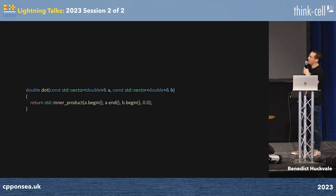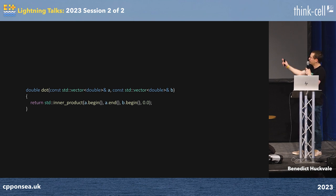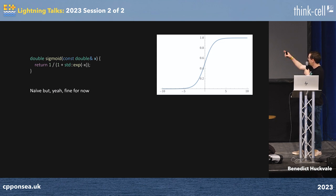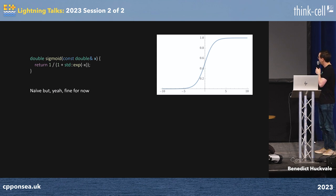Dot product — we've got inner_product, so we can just use that, brilliant. Something you need for machine learning is the sigmoid function. It's not particularly numerically stable, this one I've done here, but it's good enough for this example. The other thing you need to know is you need to get the gradient of it.